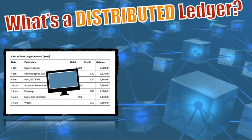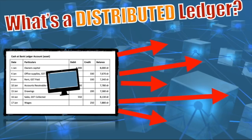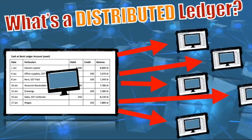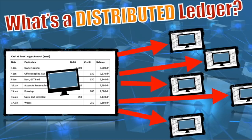So what's a distributed ledger? A distributed ledger is the same thing — a ledger with debits, credits, and balances that you might see in your accounting, your bank, or wherever else. Distributed means it is going all over the place. It is in different computers or different nodes, cast out to different systems. So it's not just sitting on one computer in one place — it is distributed.